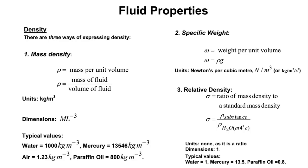There are some densities we need to know. The density of water is 1000 kg/m³ — this value is not given to you, so you need to know it. The density of mercury is 13,546 kg/m³, but in this course we round it to 13,600 for simplicity of calculations. The density of air is 1.23 kg/m³.